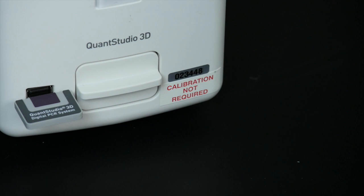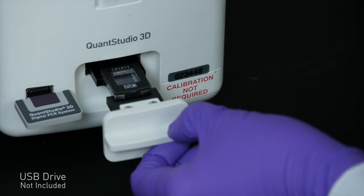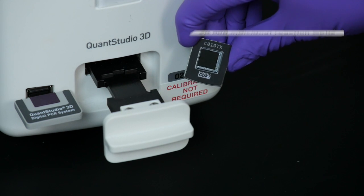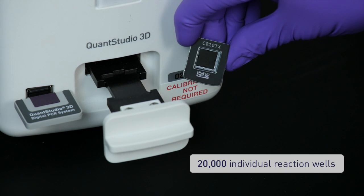Digital PCR on the QuantStudio 3D Digital PCR system employs a simple workflow with minimal hands-on time. At the heart of the system is a silicon chip, which consists of 20,000 individual reaction wells.